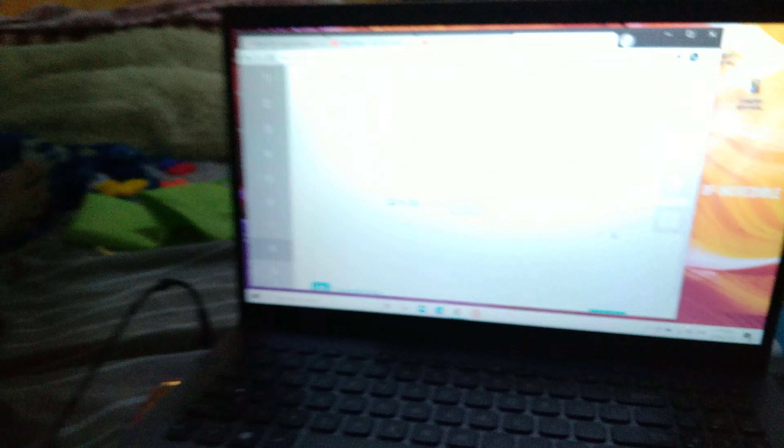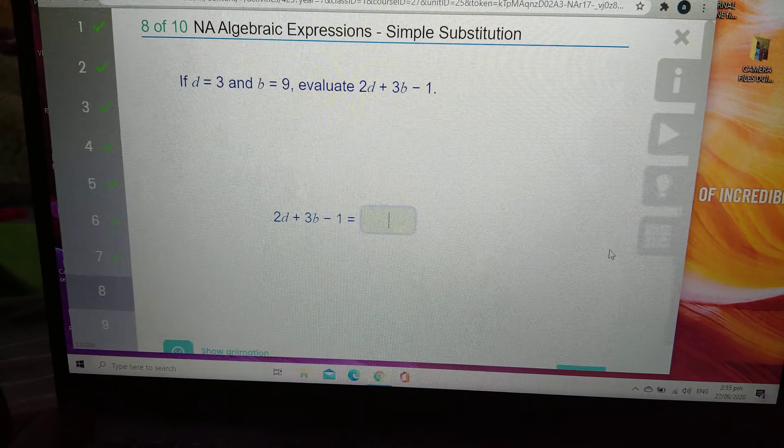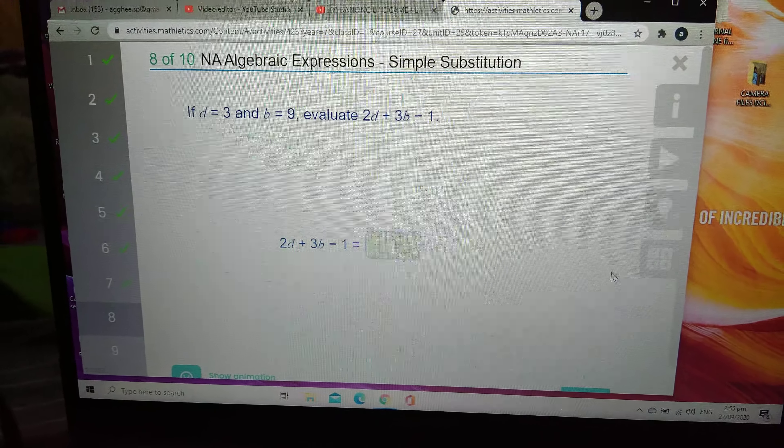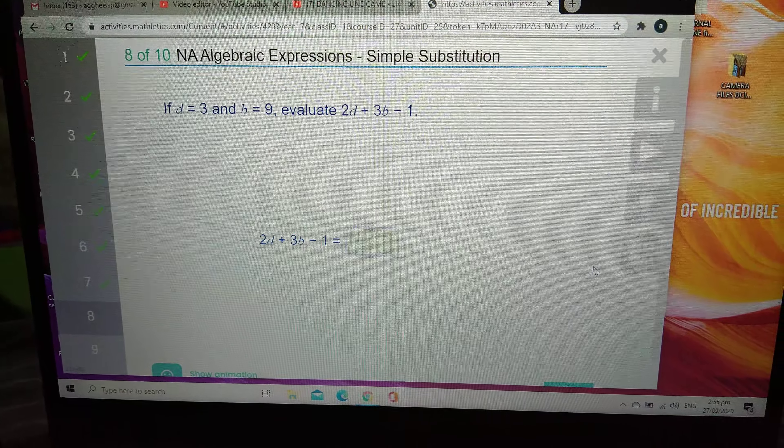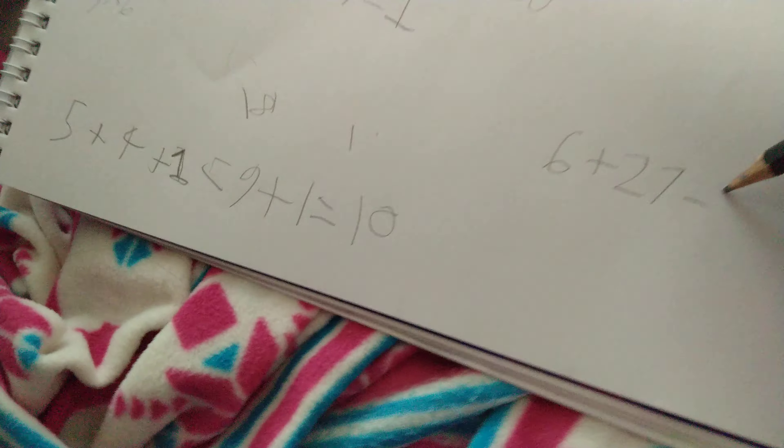It's plus and minus. If D equals 3, 2 times D is 6. And B is 9, so 3 times B is 27. And then minus 1.